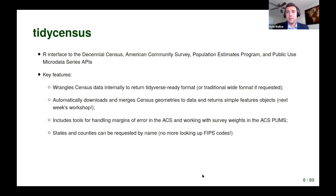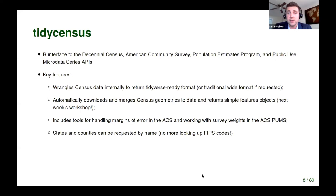I'm talking about TidyCensus, which is the package I created four years ago to act as an R interface to a variety of different Census APIs. It doesn't have the full breadth of Census API — it focuses on specific datasets I commonly use and that I've seen as the most commonly requested from the Census APIs. TidyCensus lets you access decennial census data, American Community Survey data, Population Estimates Program (PEP) data, and the Public Use Microdata Series APIs, which we'll cover more in a couple of weeks.